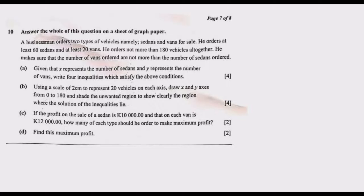A businessman orders two types of vehicles — sedans and vans — for sale. He orders at least 60 sedans and at least 20 vans. He orders not more than 180 vehicles altogether. He makes sure that the number of vans ordered is not more than the number of sedans ordered. Given that x represents the number of sedans and y represents the number of vans.